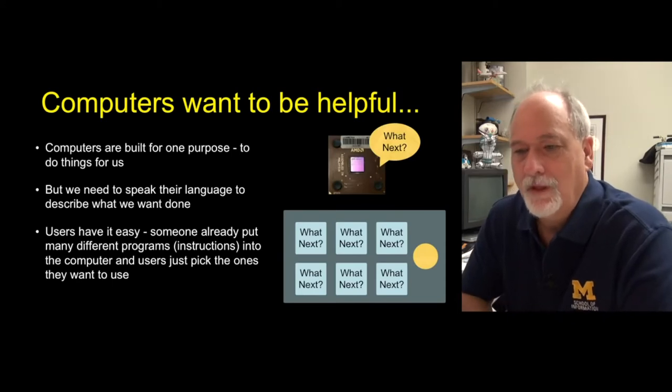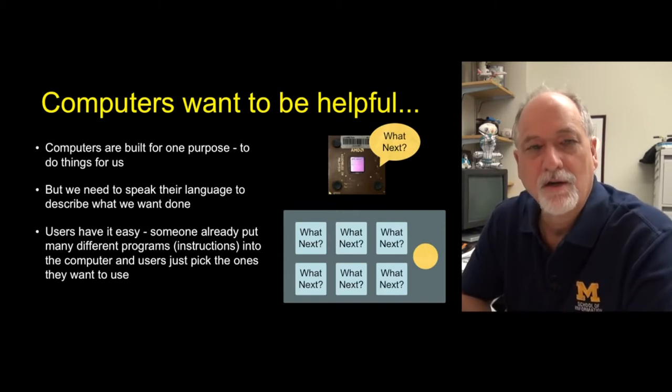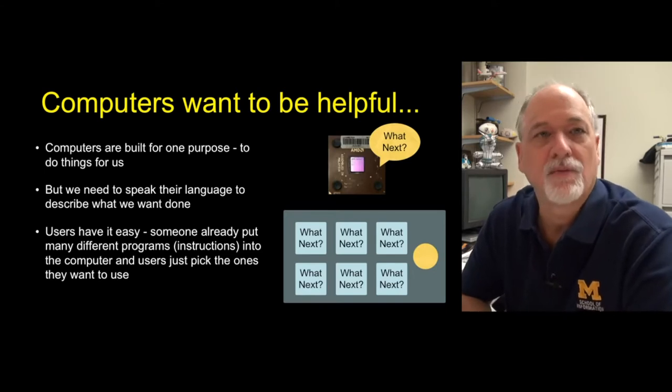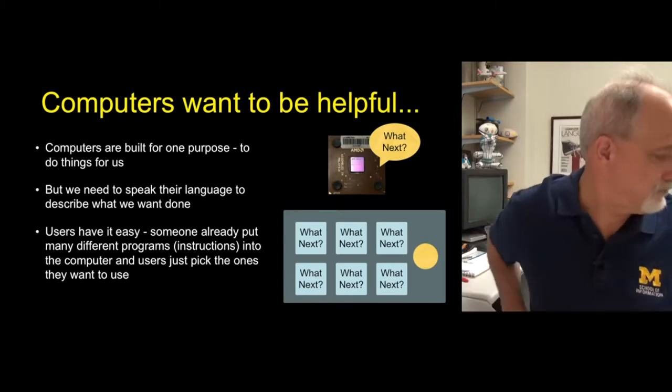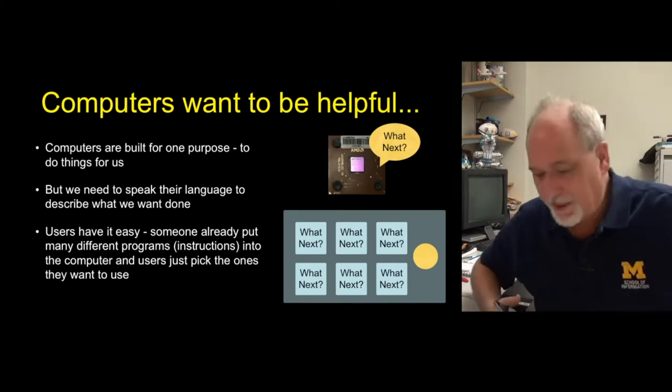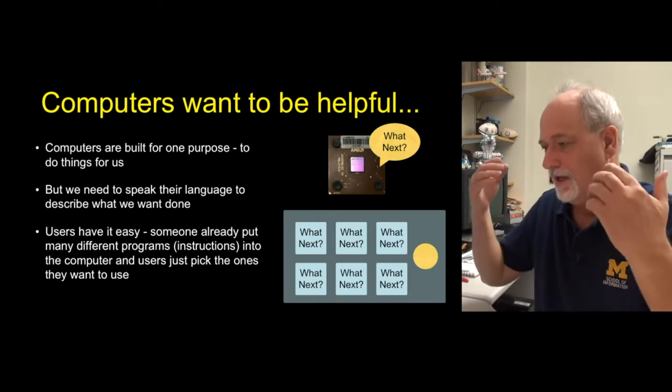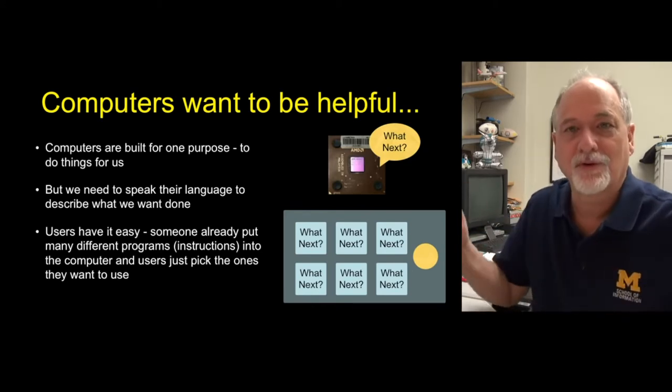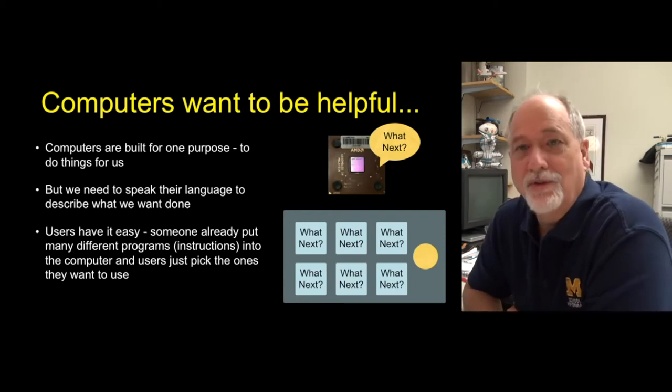The first thing to understand is that the purpose to learn to program is because computers want to do things for us. They are built and created and designed so that they basically ask us what do you want to do next. If you grab your phone, your phone does nothing until you tell it what to do. It waits for you and all the hardware, computer technology around you is generally waiting for you.